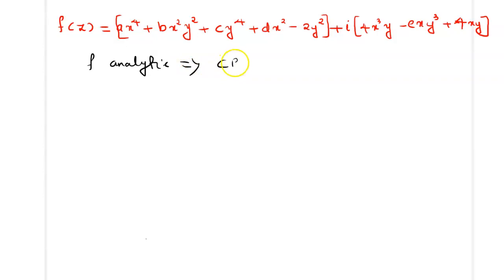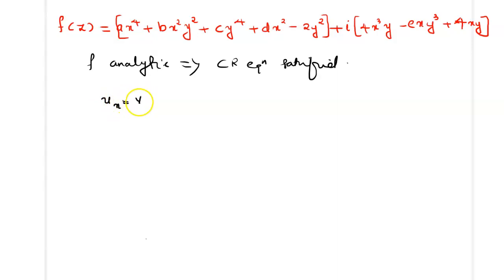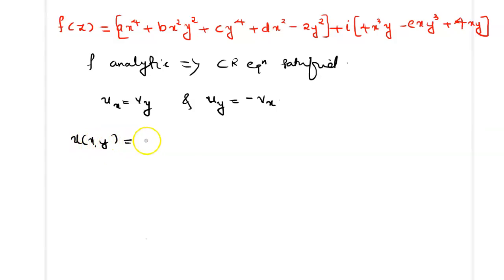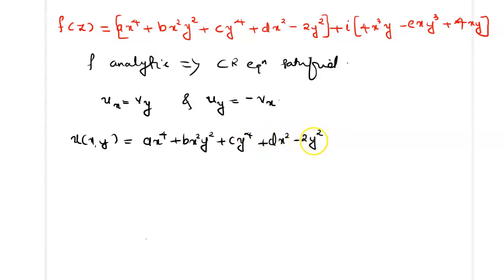Analytic implies the Cauchy-Riemann equations are satisfied. Now we identify u(x,y) is equal to ax raised to 4 plus bx squared y squared plus cy raised to 4 plus dx squared minus 2y squared. This is u(x,y).